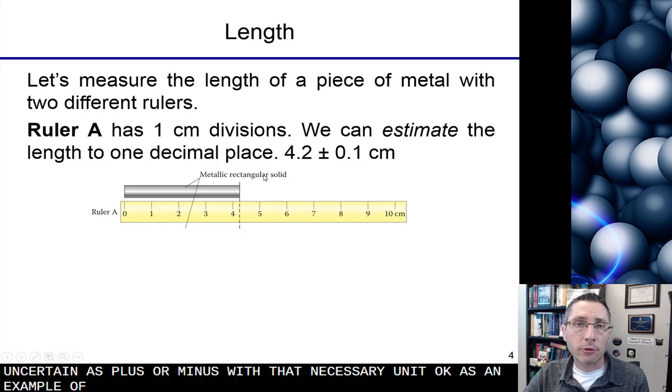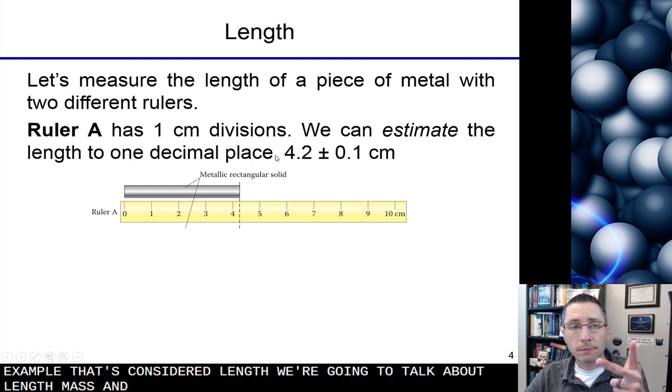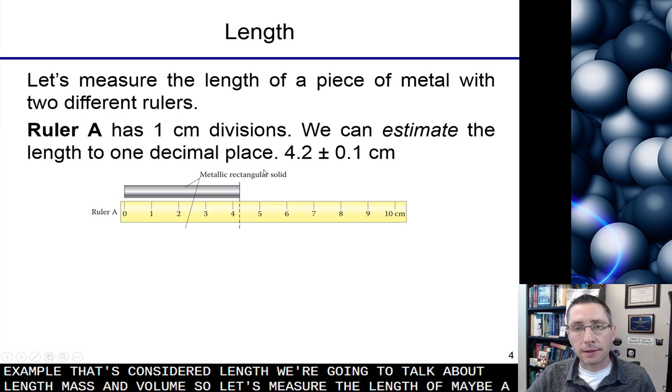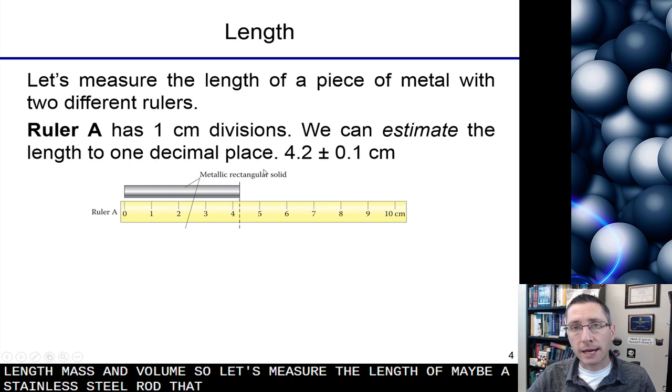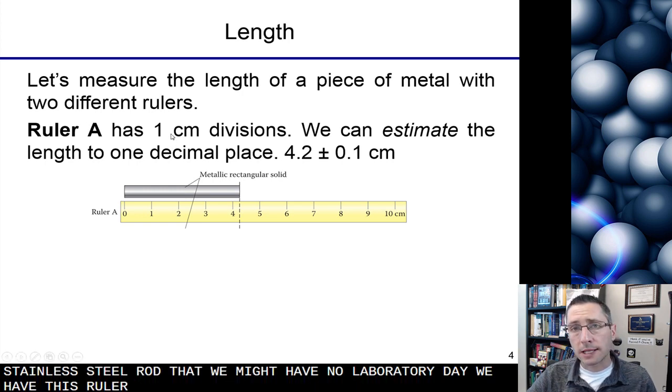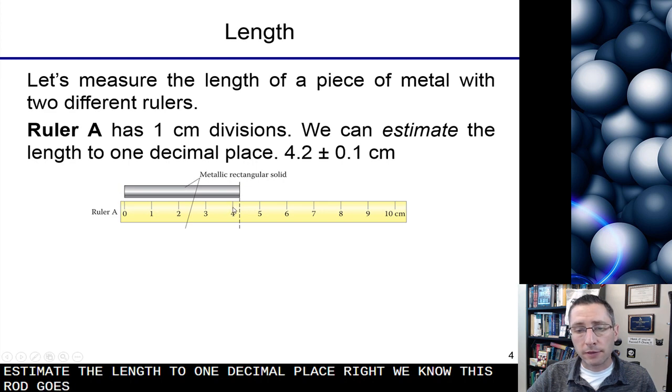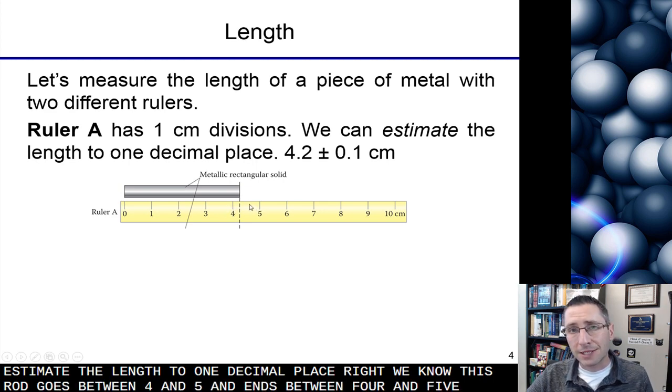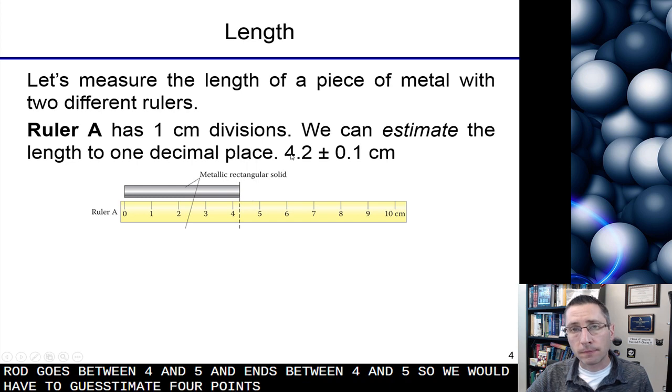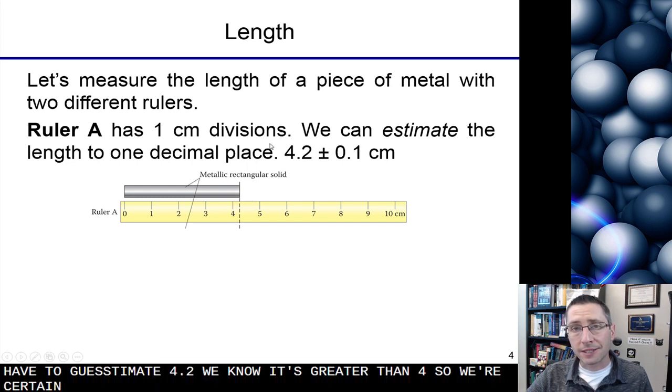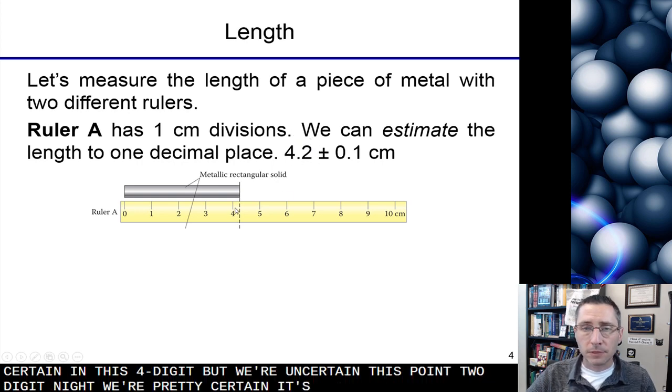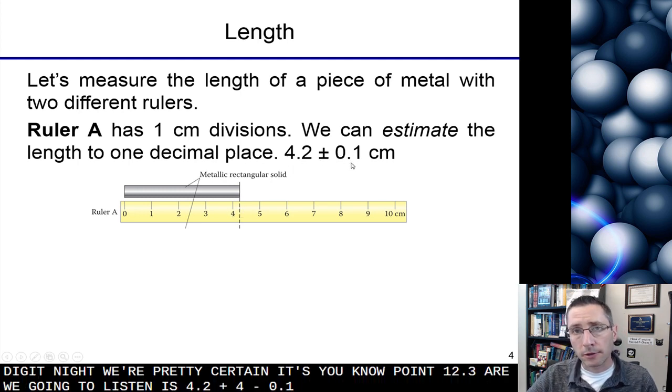As an example, let's consider length. We're going to talk about length, mass, and volume. So let's measure the length of maybe a stainless steel rod that we might have in the laboratory. We have this ruler. It has one centimeter divisions, and we can estimate the length to one decimal place. We know this rod goes between 4 and 5. It ends between 4 and 5. So we sort of have to guesstimate 4.2. We know it's greater than 4, so we're certain in this 4 digit, but we're uncertain in this 0.2 digit. We're pretty certain it's 0.1 to 0.3, but we're going to list it as 4.2 plus or minus 0.1 centimeter.